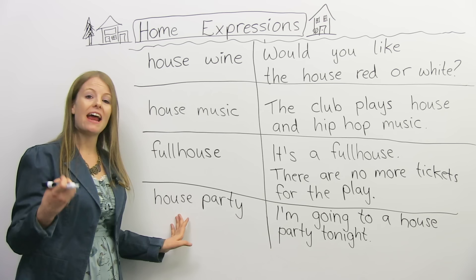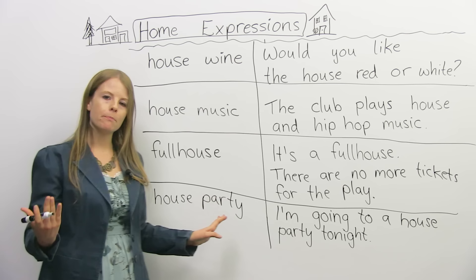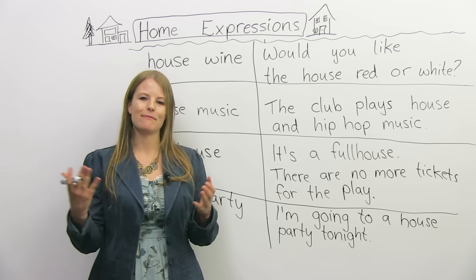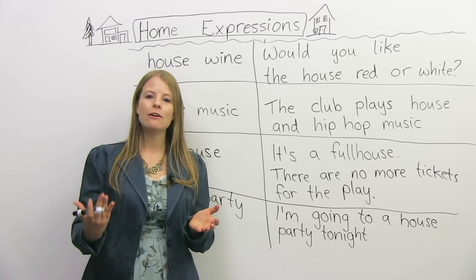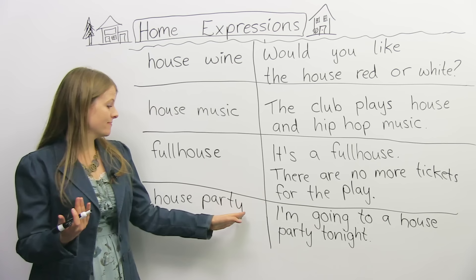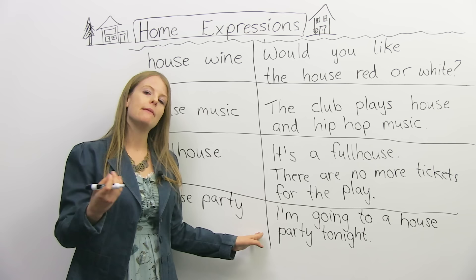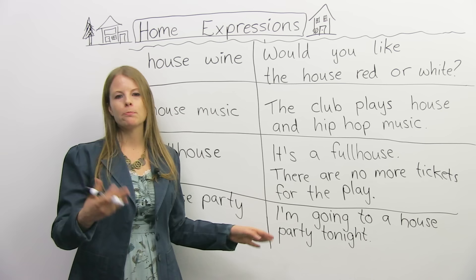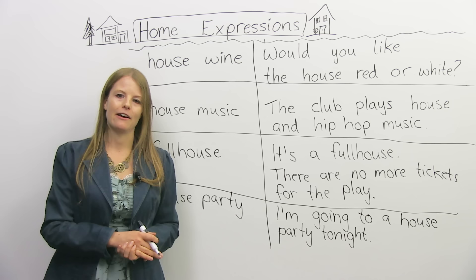Finally, a very common expression: house party. A house party is a party that somebody has at their house. We can also use it for parties at people's apartments or condos or anywhere somebody lives. For example: 'What are you doing tonight? I'm going to a house party tonight.' It means you're not going to a party at a club — you're going to someone's home, and there's probably going to be music and drinking.